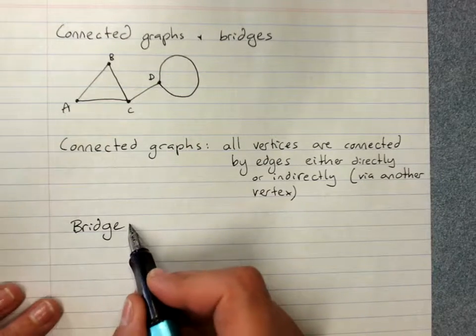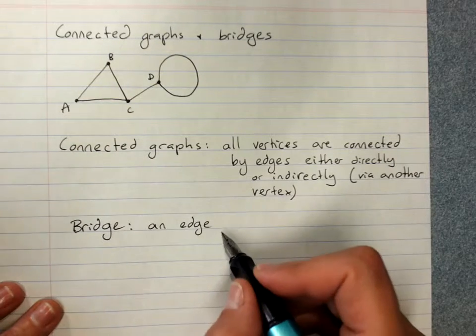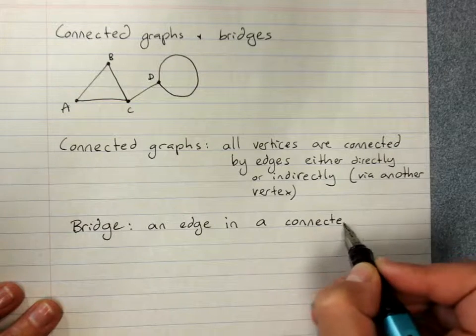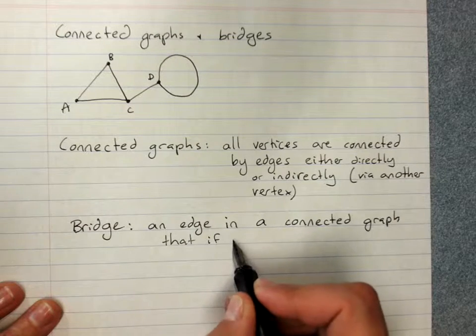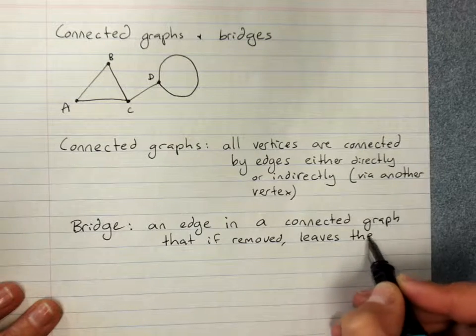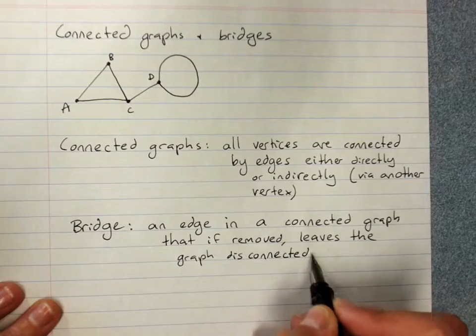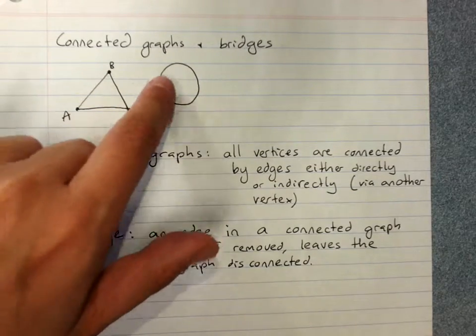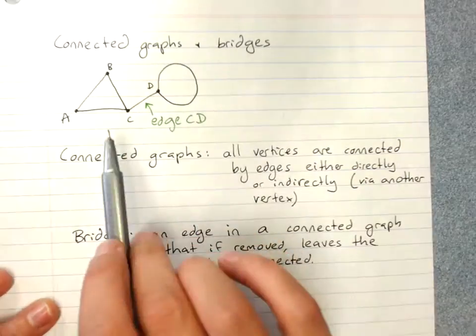A bridge is an edge in a connected graph that if you took it out, it would break that connectivity. And you can see why you'd want to identify points of possible failure. So CD, we would call this, by the way, edge CD, is a bridge.